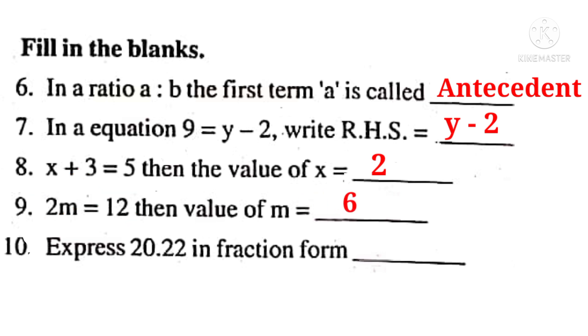No. 10. Express 20.22 in fraction form. Observe that there are two decimal places. So write 2022 in the numerator. In the denominator, write two zeros after 1, that is 100. Now on simplification by 2, 2, 1011 times. By 2, 50 times. That is 1011 by 50 is the answer.